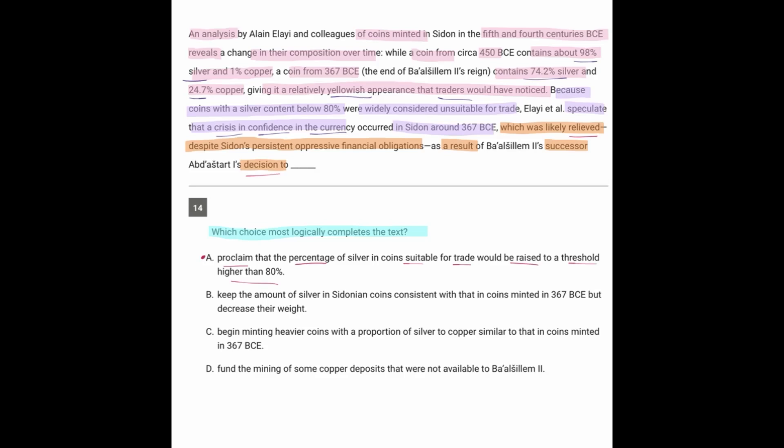Now, that answer did honestly seem like a good one to me, because if coins with less than 80% were unsuitable, then to restore the confidence, someone might declare, let's make them suitable by raising the percent above 80%. But the reason given by College Board for why this is not the right answer is because the country had persistent oppressive financial obligations. In other words, they were broke. They were having financial trouble. So they couldn't just simply add more of the silver, which was the really expensive thing.